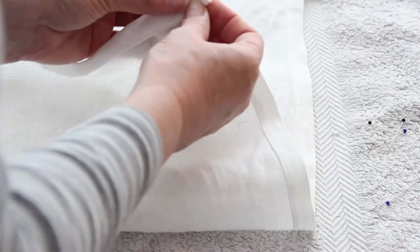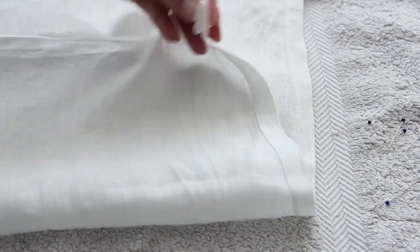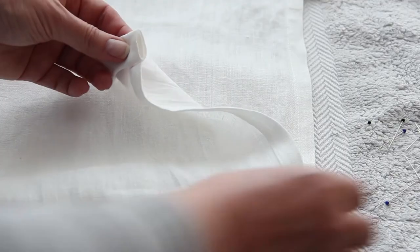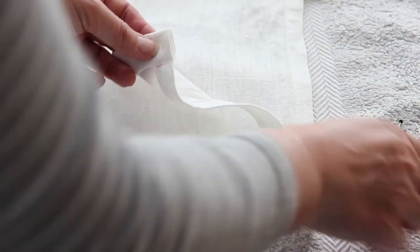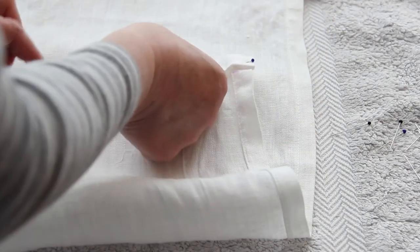To turn up the hem we're just going to do a double fold so you can do this with the iron. Turn the material one inch and iron that first, and then turn it up again and iron it again and that's your hem.